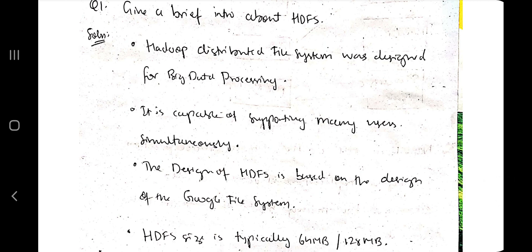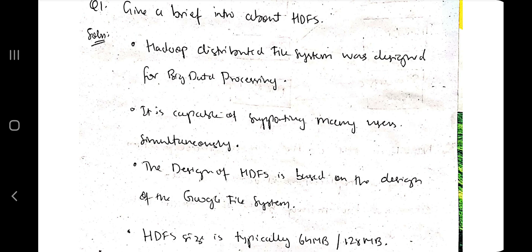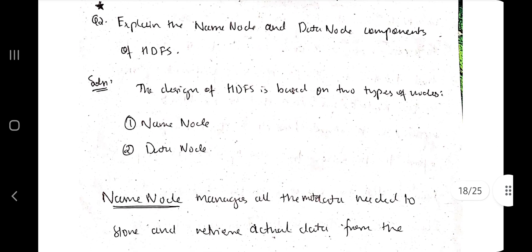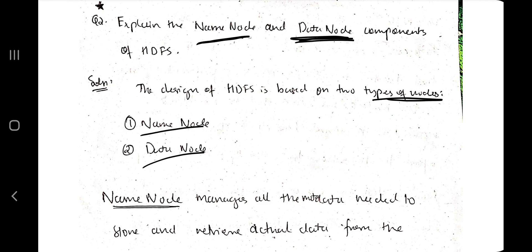A separate question on HDFS intro won't be asked alone — it will be asked in connection with some other question, so write those four points. Moving on to the second important question: what are name nodes and data nodes, what are the differences between them and how are they interrelated? This is a very important question from an exam point of view. HDFS is based on two important types of nodes: name node and data node.